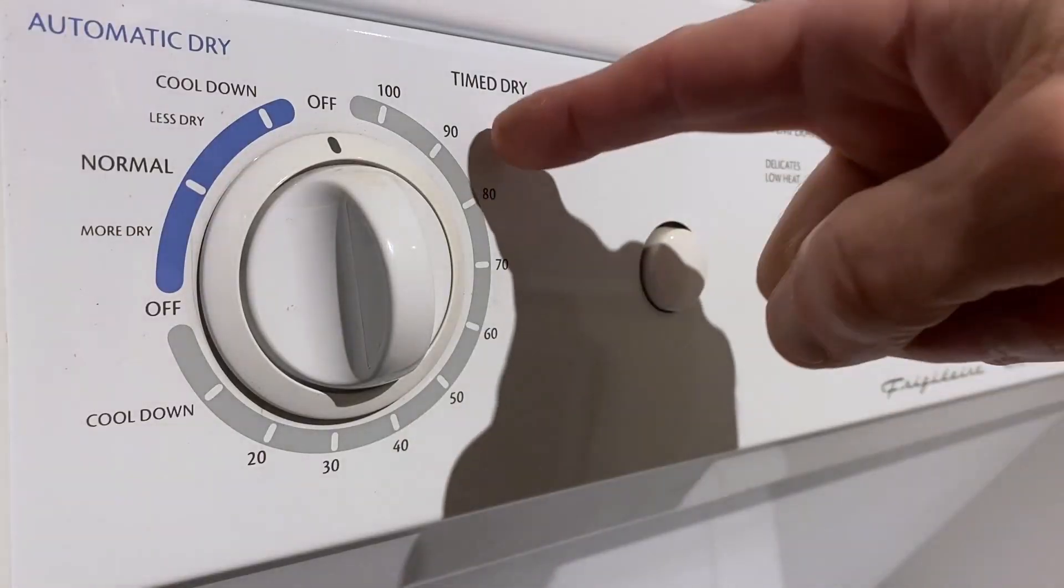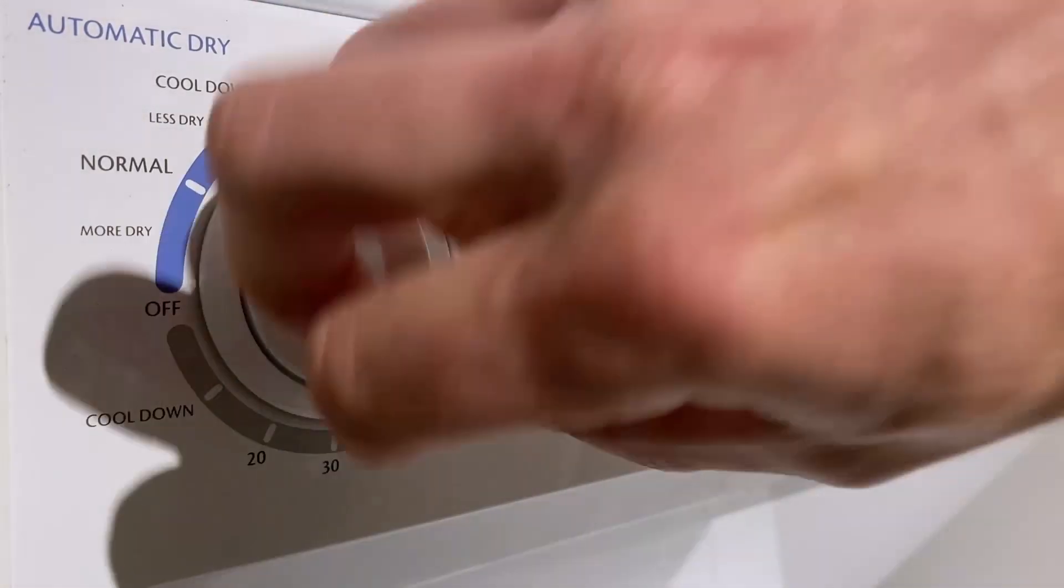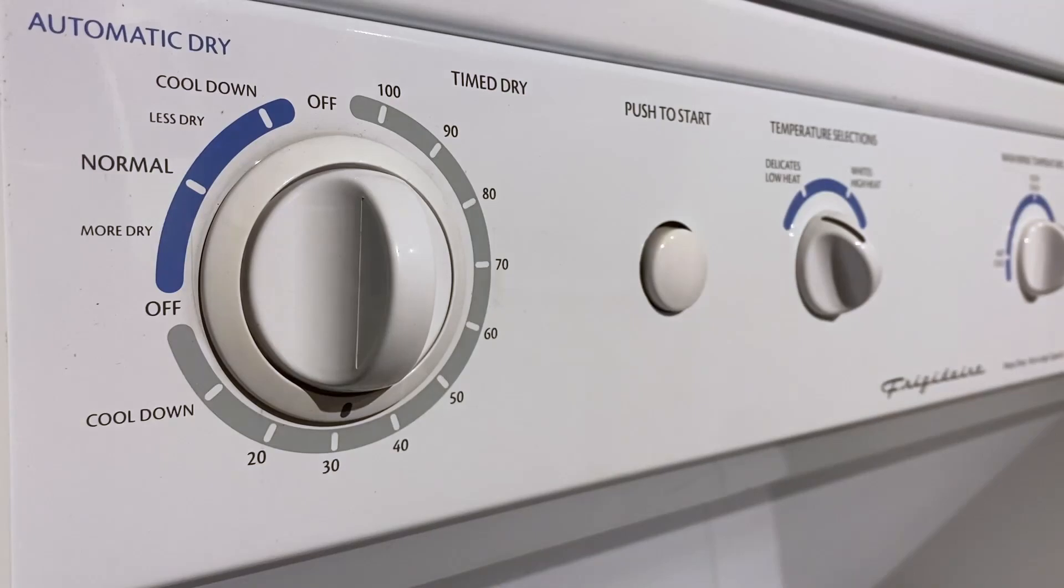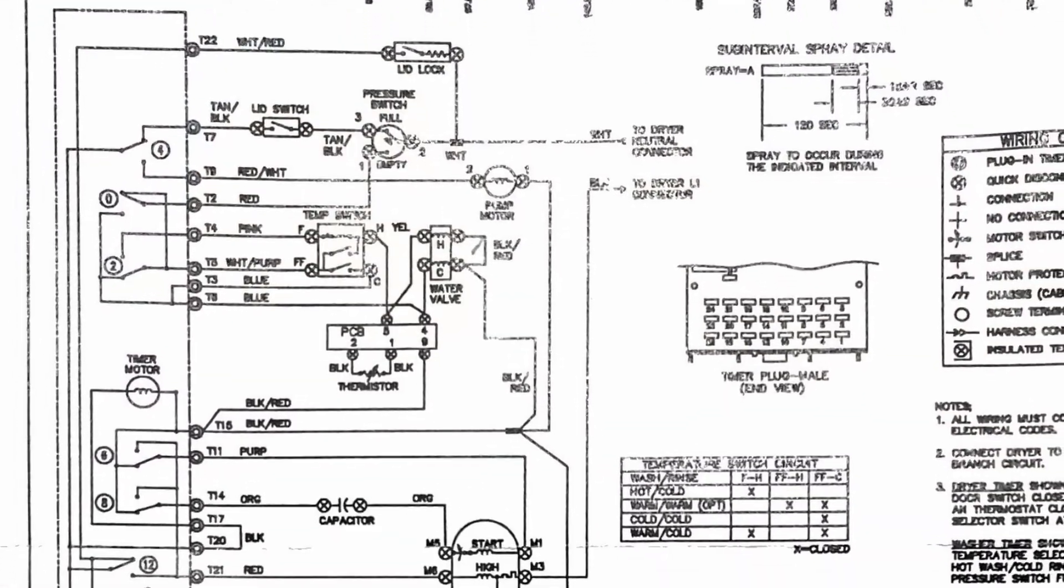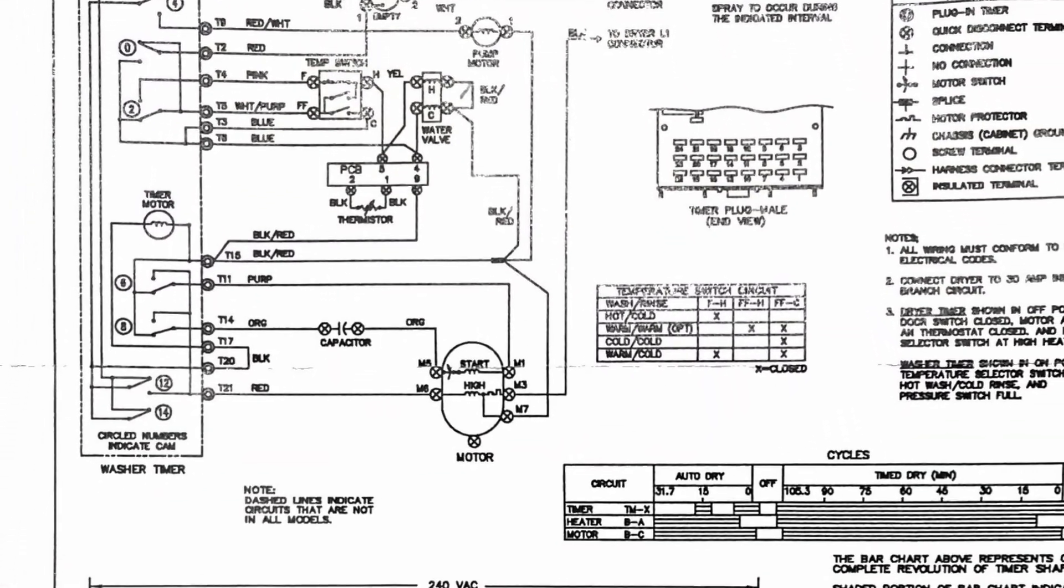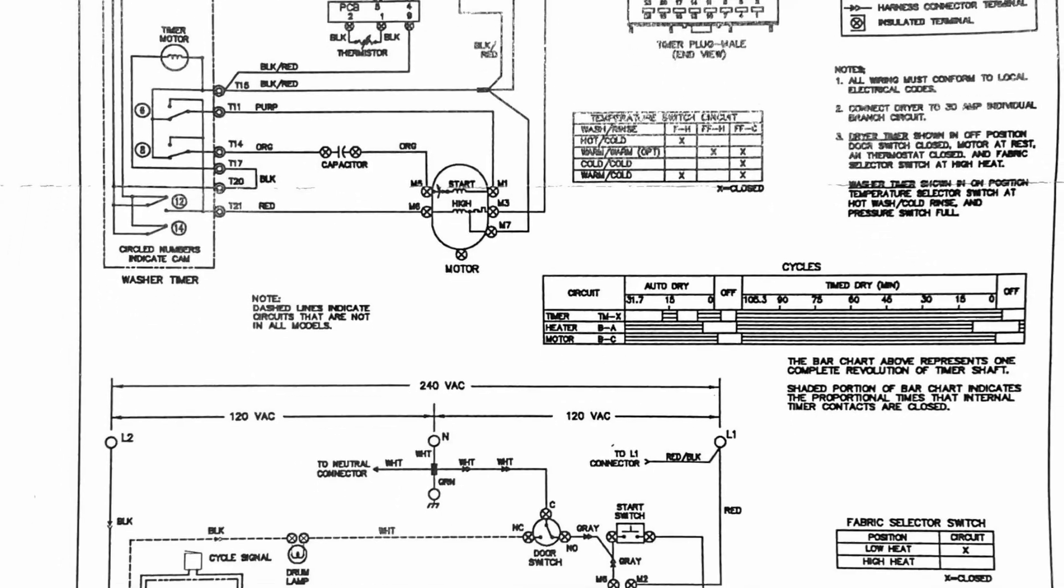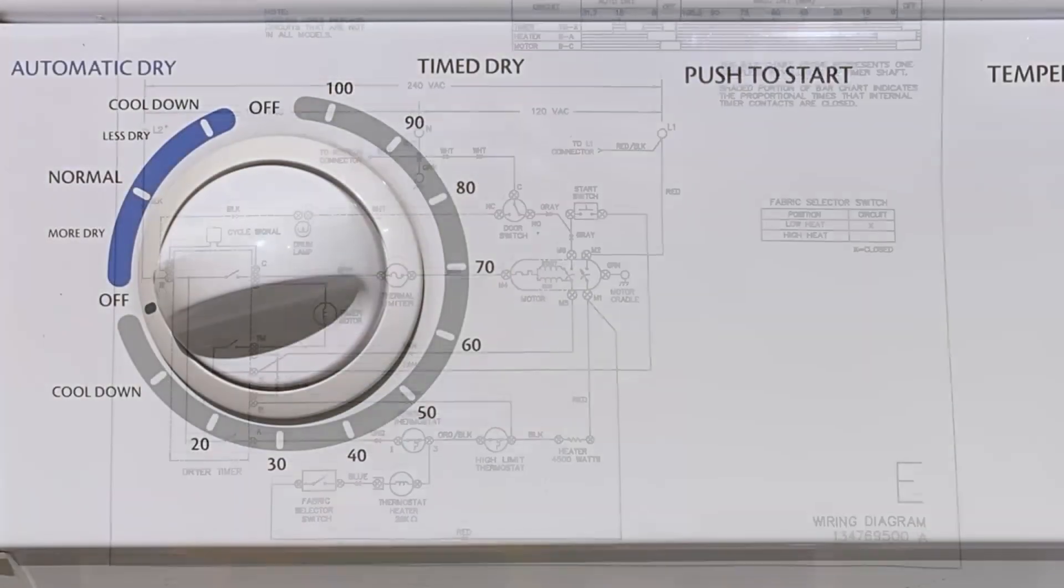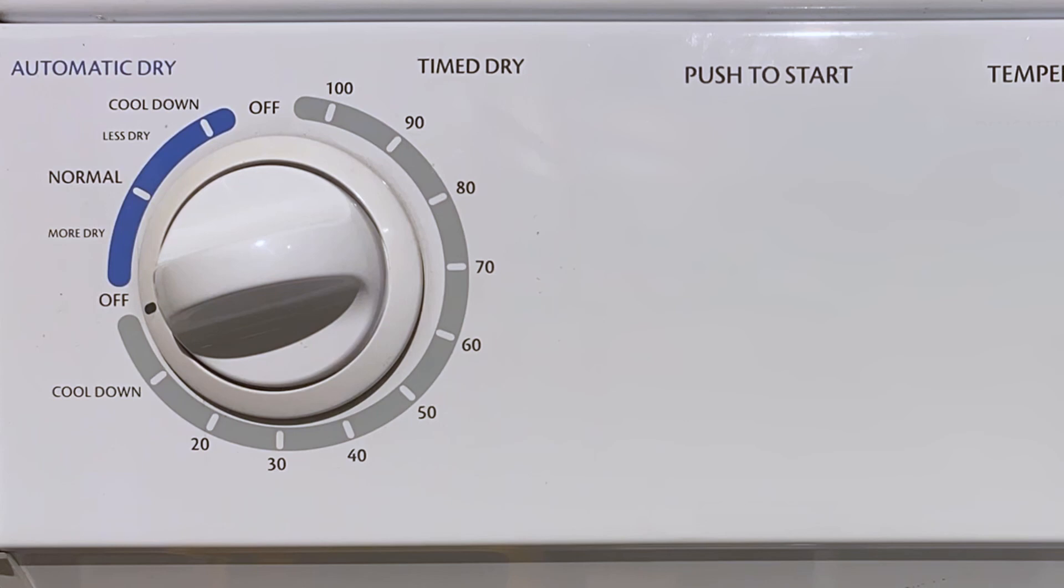I think it's best if we start by looking at the timed setting. I call this the dumb mode. Now before we run the cycle, let's familiarize ourselves with how this thing is wired to better understand the data we'll capture. The dryer came with these detailed wiring diagrams that are pretty interesting, but for the purpose of this video we can simplify the schematic.